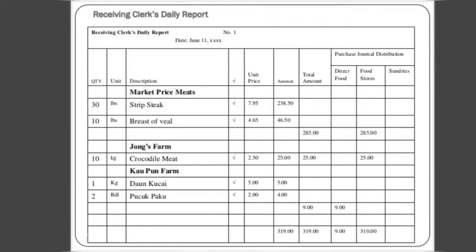Here is a receiving clerk's daily report. The date is listed at the top, along with columns for quantity, unit, description of items, unit price, amount, and total amount for each item. The categories include general distribution, direct food, food stores, or sundries.